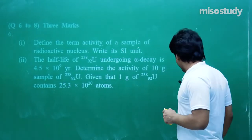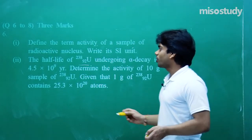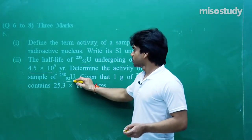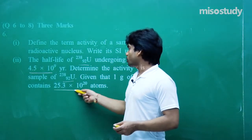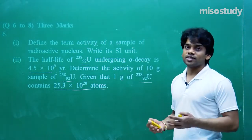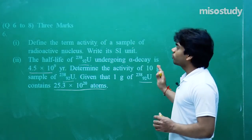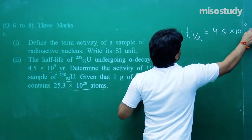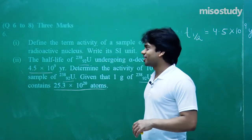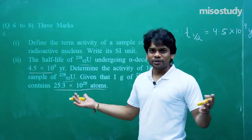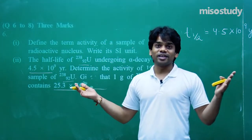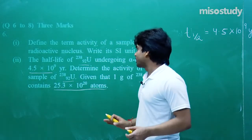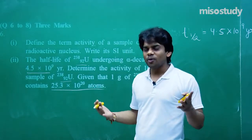The half-life of uranium-238-92 undergoing alpha decay is 4.5 into 10 to the power 9 years. Determine the activity of a 10-gram sample of uranium-238-92, given that 1 gram contains 25.3 into 10 to the power 20 atoms. Uranium has such a large half-life — on the order of billions of years — which is why uranium is still found in its natural state today. Half-life is 4.5 into 10 to the power 9 years.